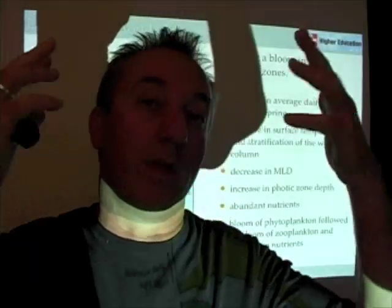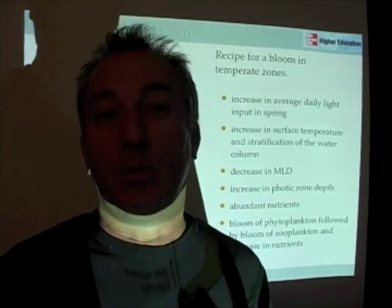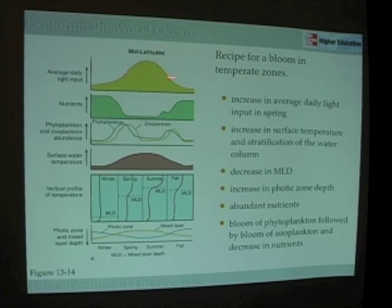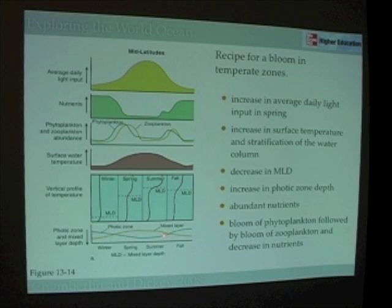Of course, in winter it starts all over again. We have lots of cooling, deepening of the mixed layer depth, lots of vertical mixing, and no light or very low light levels available for phytoplankton. As a result, phytoplankton concentrations fall down to their wintertime levels. So take a look at this figure. Follow what's happening with average daily light input, concentrations of nutrients, the abundance of phytoplankton and zooplankton, the surface water temperatures, the vertical profile of temperature, and in particular the depth of the mixed layer depth and how it changes through the seasons, and also follow the depth of the photic zone, which actually gets deeper in summertime, particularly when the phytoplankton clear out.